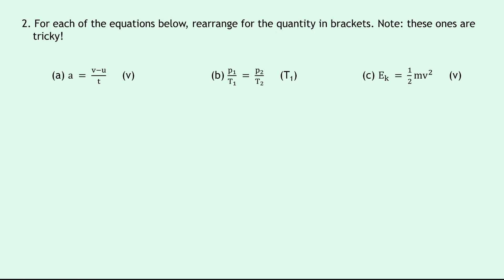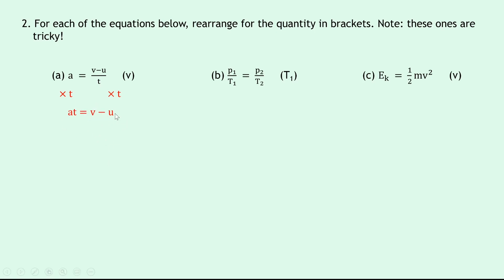Moving on to question two — these ones are slightly trickier. Again we rearrange for the quantity in brackets. Part A is the acceleration equation: a equals v minus u over t, and we have to rearrange for the final speed v. First we multiply both sides by t to get rid of the denominator, giving us at equals v minus u. Then we add u to both sides, leaving us with v equals u plus at.